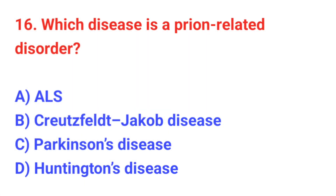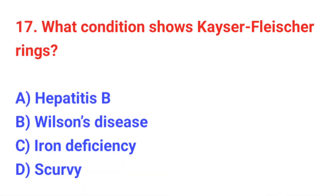Question number 16: Which disease is a prion-related disorder? The correct answer is C: Creutzfeldt-Jakob disease. Question number 17: What condition shows Kayser-Fleischer rings? The correct answer is B: Wilson's disease.